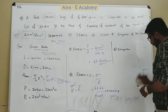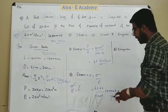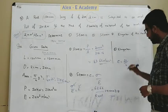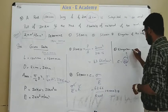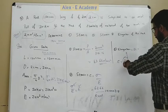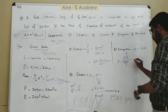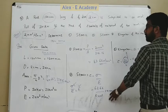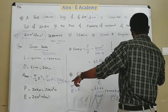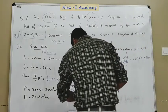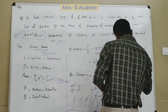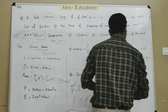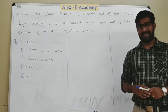Now find the elongation. The elongation is 0.477 mm. This is the elongation of the rod.